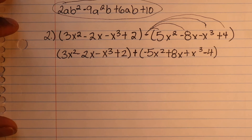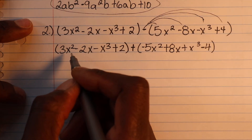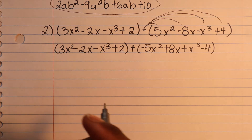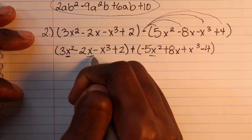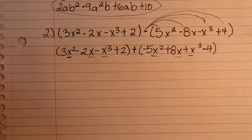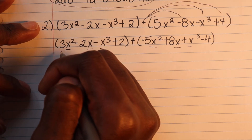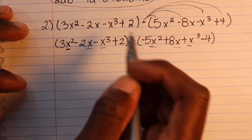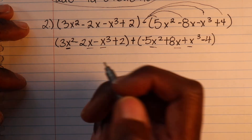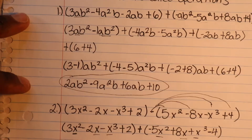Now that we have that taken care of, everything we did in question 1 we can now do in question 2. Just make sure you look at it like it's a wall. First, find like terms — orange to orange. We have x² here and x² here, an x here and x here, and an x³ here and x³ here.